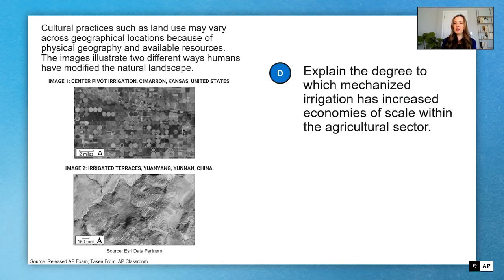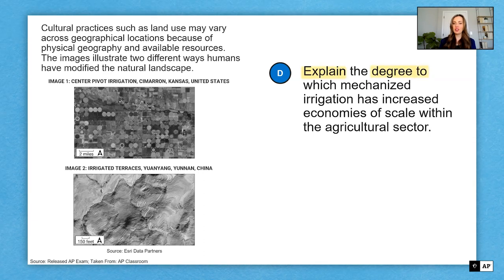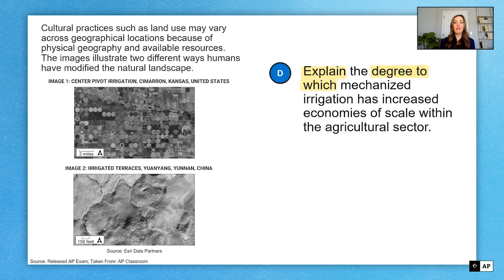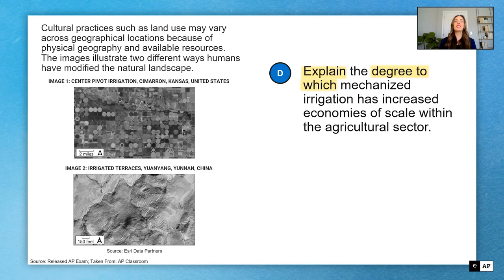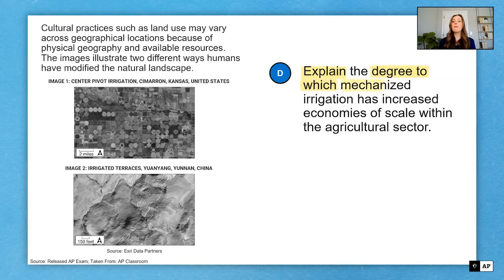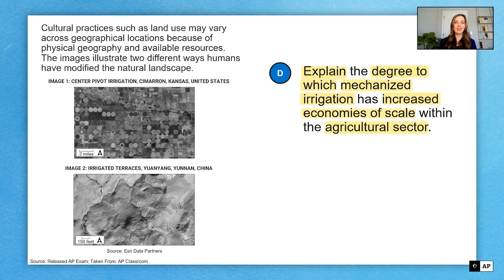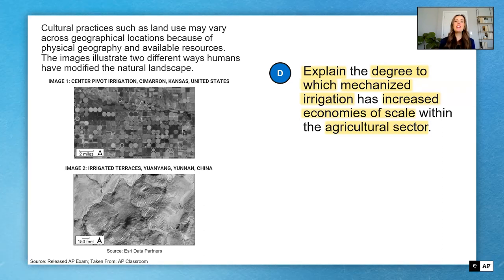Okay, we have one of those tricky question stems. It says, explain the degree to which. I wanted to take some time today to focus specifically on this type of question, because it can throw students off. They get a little confused by this strange phrasing, degree to which. It's not typically how we talk about things. It's not the most common question stem. But don't be afraid. There is an easy way to tackle this kind of question. So what do they want us to explain? Well, they want us to explain the degree to which mechanized irrigation has increased economies of scale within the agricultural sector. Don't be scared by a complex question like this. When you annotate, just break it down into its various parts.